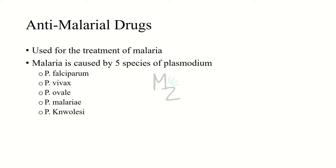Now let's talk about anti-malarial drugs. Malaria is an acute infectious disease caused by five species of protozoal genus Plasmodium. It is transmitted to humans through the bite of a female Anopheles mosquito, and the classic presentation begins with headache and fatigue, followed by fever, chills, and sweats. The five species are Plasmodium falciparum, P. vivax, P. ovale, P. malariae, and P. knowlesi.